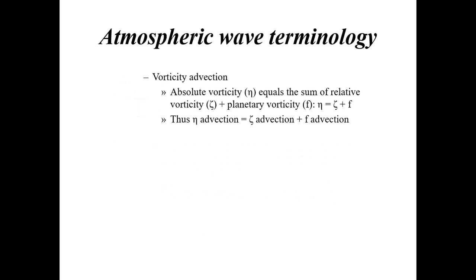Another factor wave speed depends on is vorticity advection. Vorticity is simply the rate of spin of an imaginary air parcel. We look at vorticity advection especially associated with short waves forming at 10,000 to 18,000 feet. Absolute vorticity equals the sum of relative vorticity plus planetary vorticity. Positive vorticity advection (PVA) causes upper-level heights to fall — for example at the 500 millibar level or 18,000 feet. Negative vorticity advection (NVA) causes heights to rise.